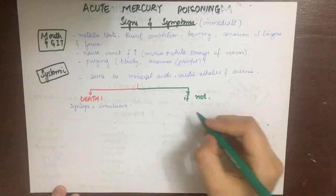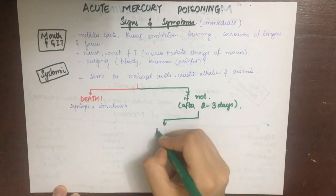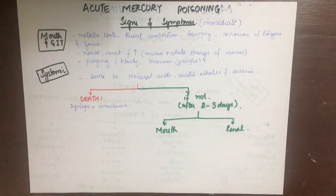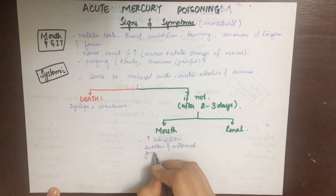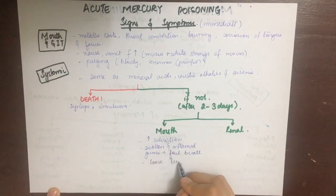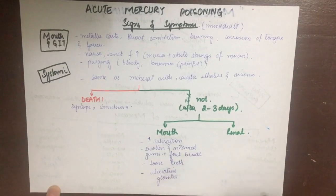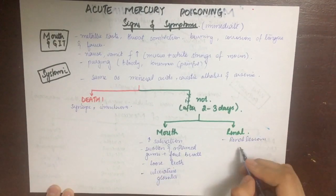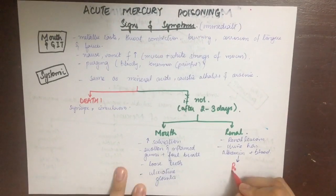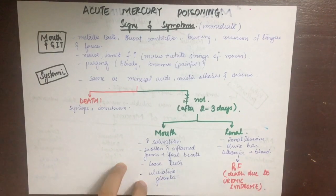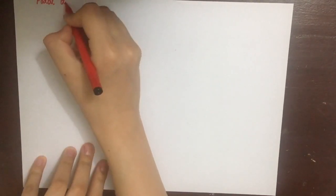If death from systemic symptoms does not occur immediately, it would be due to syncope or convulsions. If the patient survives, they will die of renal failure after two to three days. The mouth will show increased salivation, swollen and inflamed gums, foul breath, loosening of teeth, and ulcerative glossitis. Renal complications include albumin and blood in urine, and death is due to uremic syndrome with increased uric acid and creatinine. The fatal dose is about one to two grams.